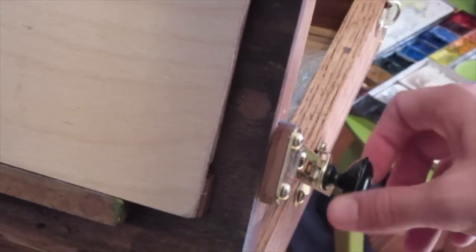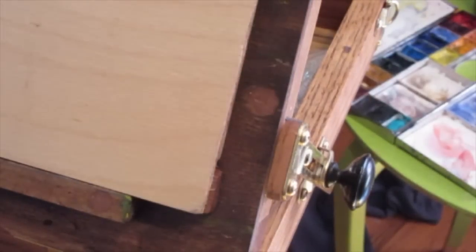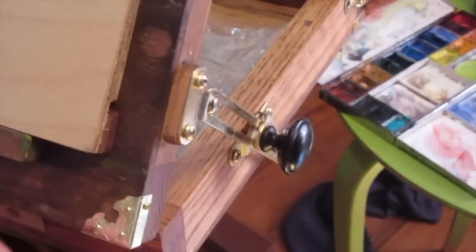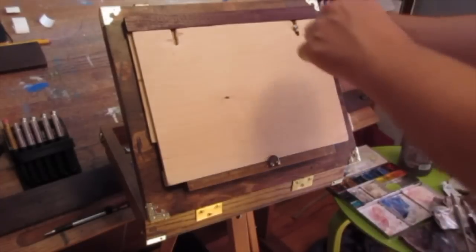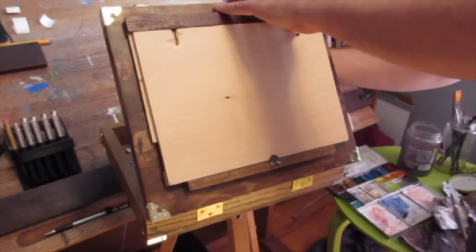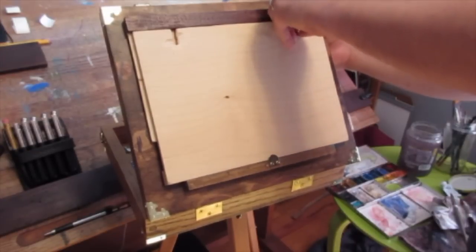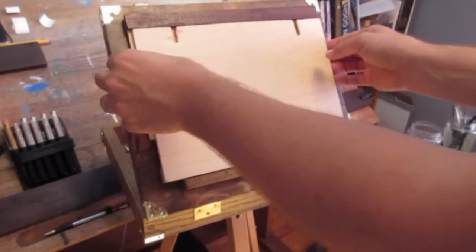It's held open by this door latch, or I think it's been called a stop. It's made for drawers or cabinets to hold it open at a certain place. So just with a little bit of adaptation I was able to bend it and kind of get it to fit on this box so that it sits flush on the side.